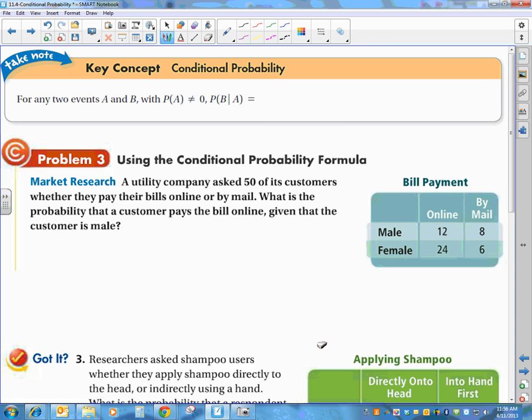Now let's talk about a formula. We have two events, a and b, with the probability of a not equal to 0. And this is read, the probability of b given that a has happened.